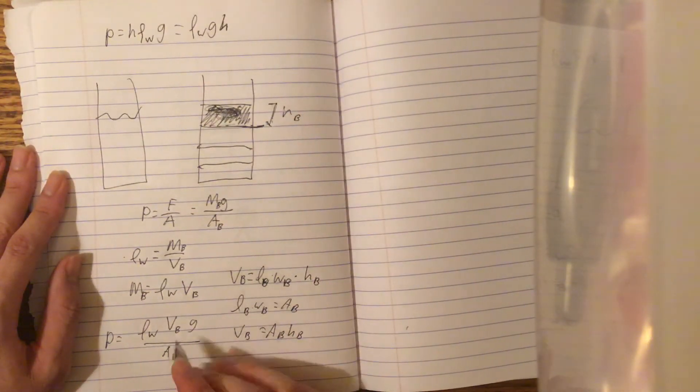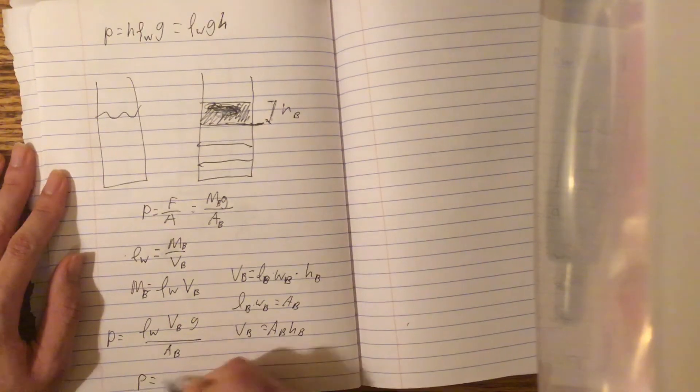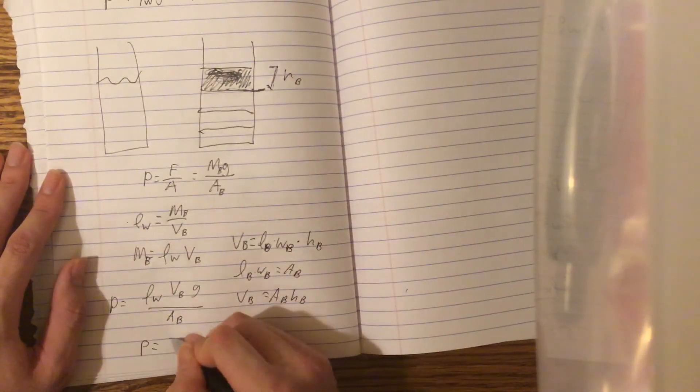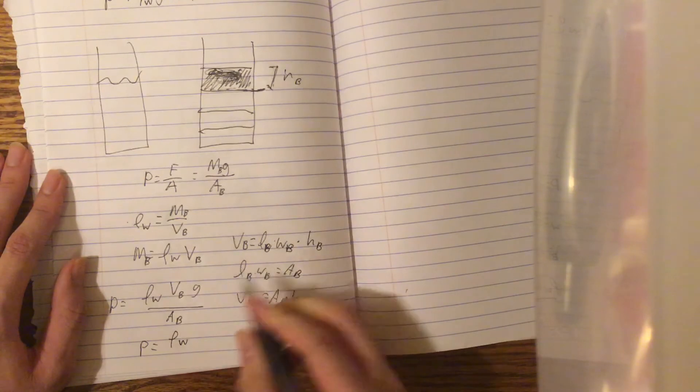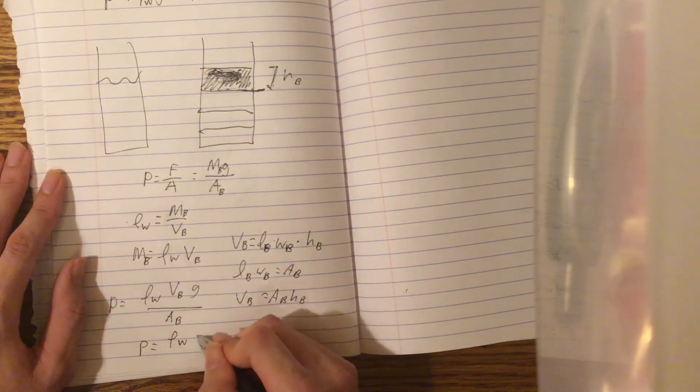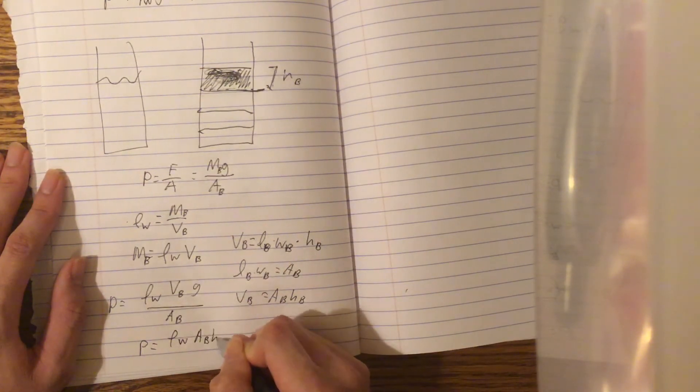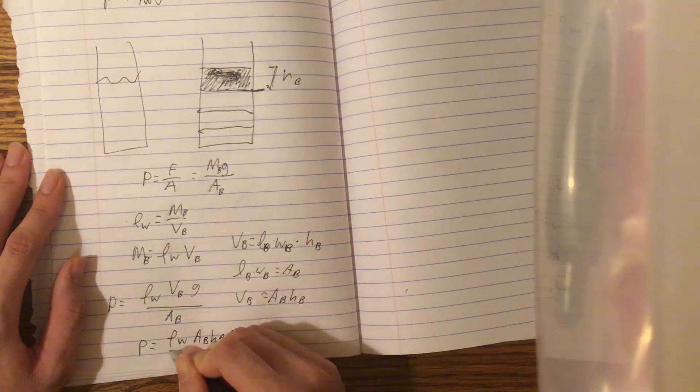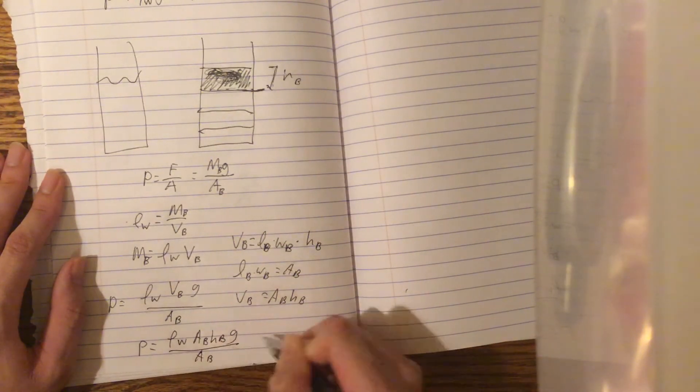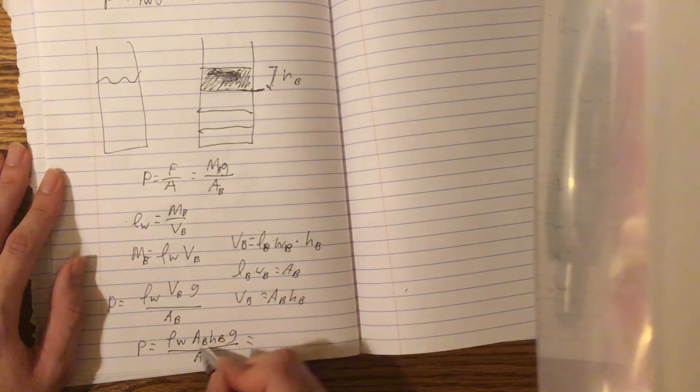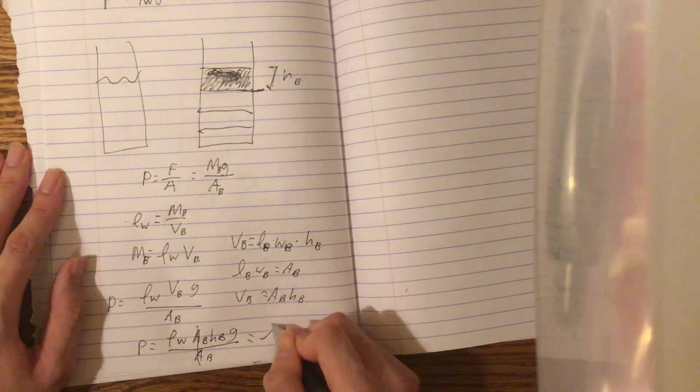So we can plug this volume back into here. And hence, we get that the pressure equals ρw, or the density of water, times the area of the block times the height of the block times the gravitational constant over the area of the block. And hence, we get that these areas just cancel out.